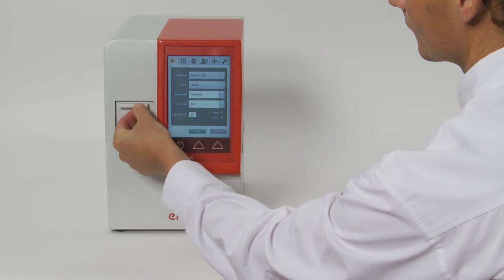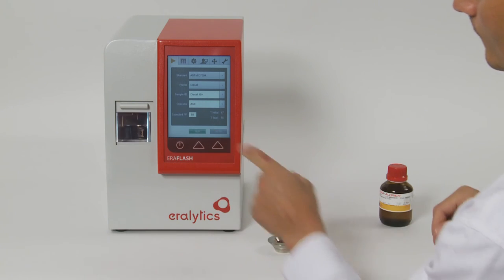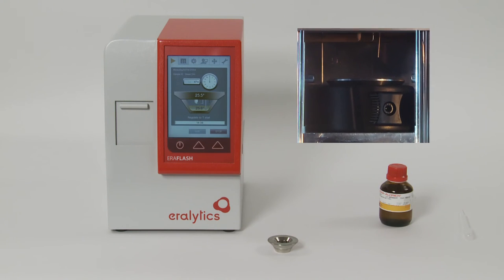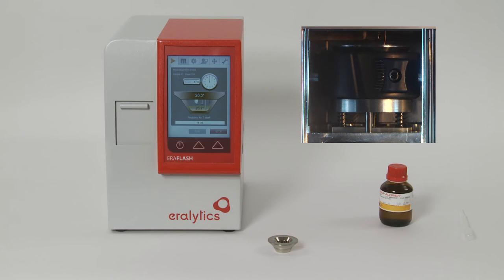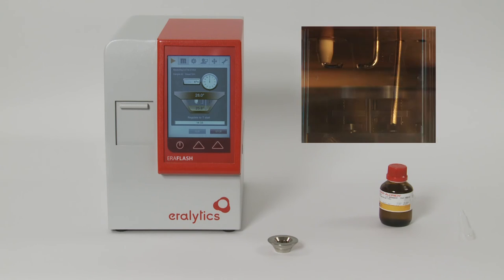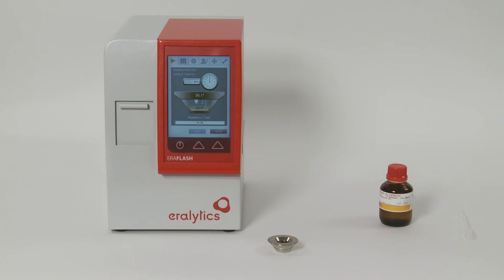Close the door and press run. The test measurement starts by lifting the sample cup to create a continuously closed chamber. Its unique design makes the Error Flash the safest flashpoint tester available because there are no open flames or glowing wires at all. The complete measurement is fully automated and only takes a few minutes.